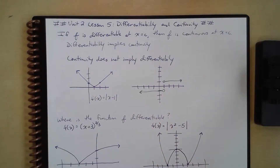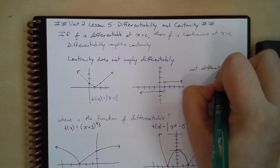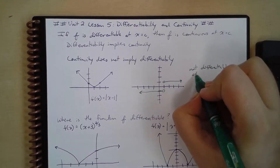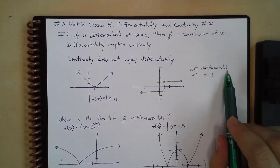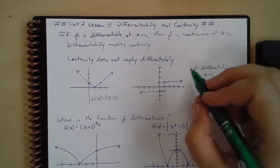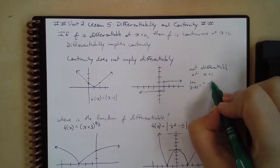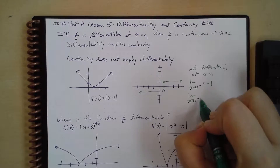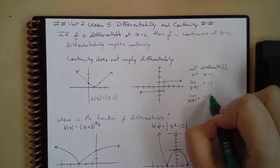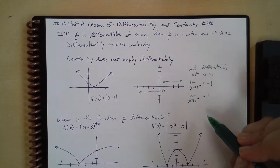So f of x is not differentiable at x equals 1, because our limit as x approaches 1 from the left is equal to negative 1, and our limit as x approaches 1 from the right is equal to 1. These are not equal, so the limit does not exist. So there's no derivative at x equals 1.